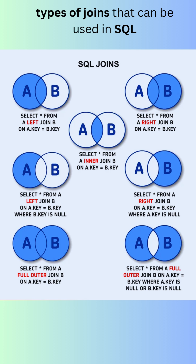A full outer join returns all rows from both tables, whether or not there are matching rows in the other table. The image shows a few examples of each type of join. For example, the first example shows a left join.